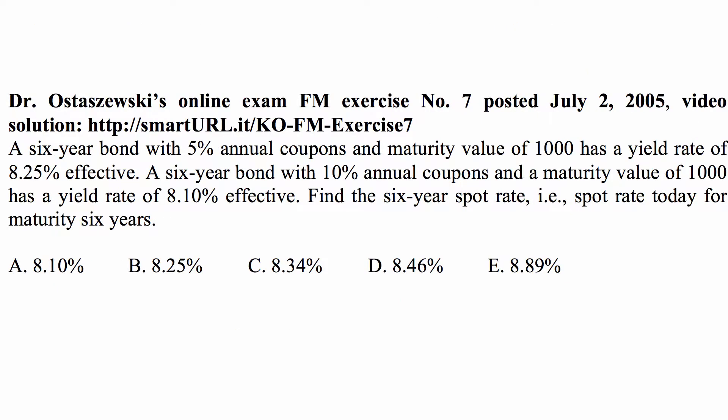Here's the problem for today for Exam FM on financial mathematics. A six-year bond with 5% annual coupons and maturity value of 1,000 has a yield rate of 8.25% effective. A six-year bond with 10% annual coupons and maturity value of 1,000 has a yield rate of 8.10% effective.